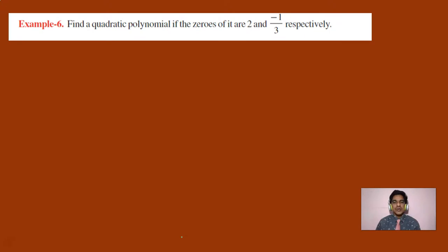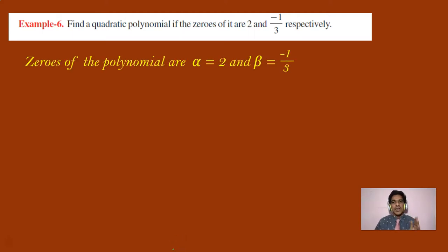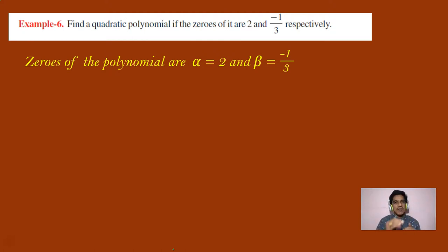Now the next example: find a quadratic polynomial whose zeros are 2 and minus 1 by 3. Here we are directly given the zeros, so alpha equals 2 and beta equals minus 1 by 3. Note carefully — here the zeros are given directly, not the sum and product. So we need to first calculate alpha plus beta and alpha beta.